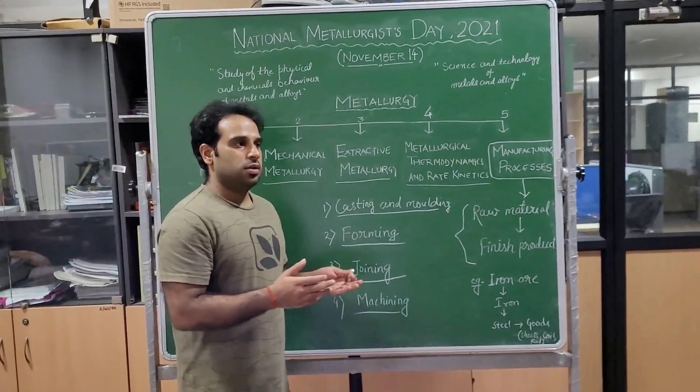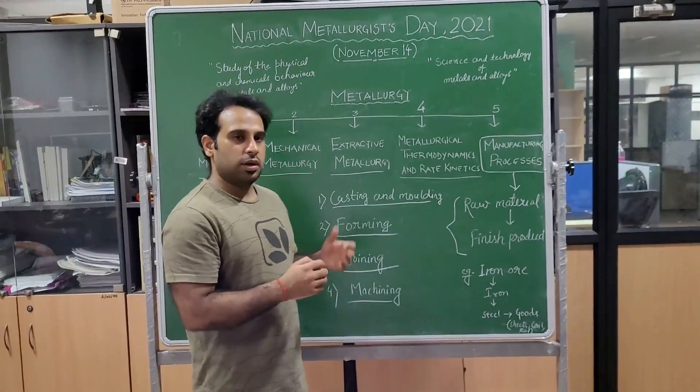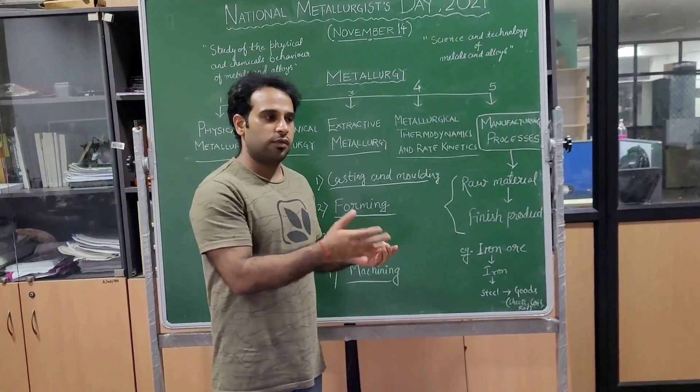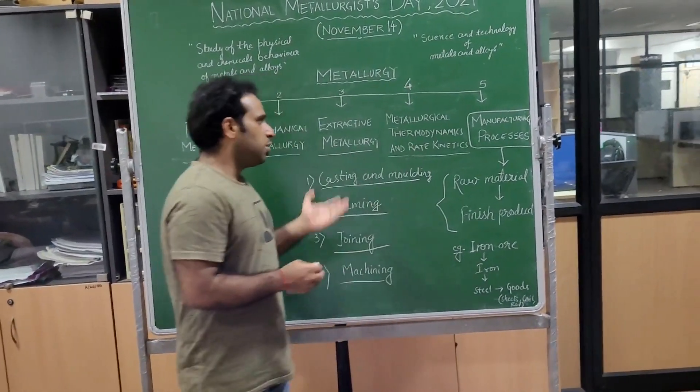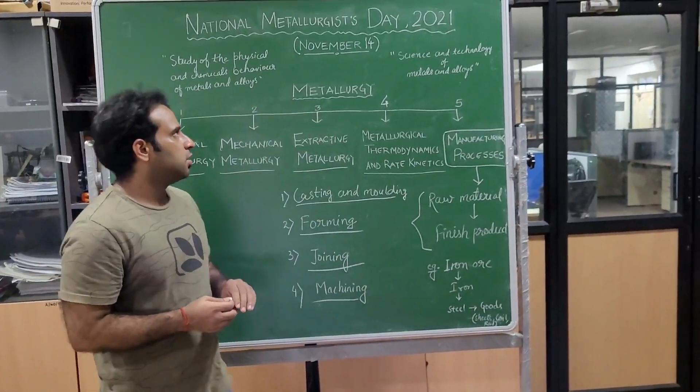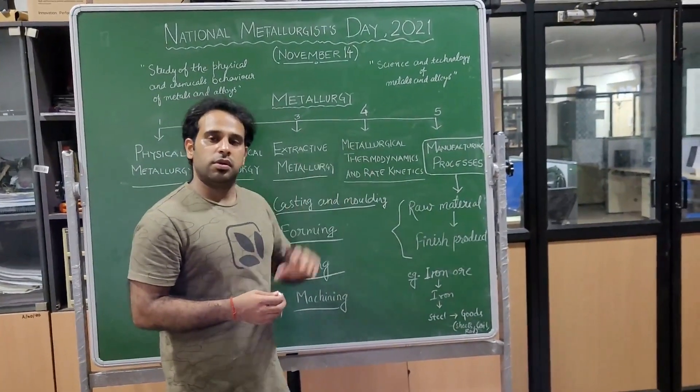The last one is the machining process, where we are basically machining our existing product, for example cutting or drilling of the engineering product. These are the different kinds of manufacturing processes, which is the final category of metallurgy.